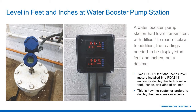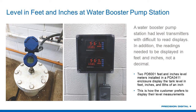The next one we'll talk about is level in feet and inches at a water booster pump station. A lot of times we see customers that want to see readings in feet and inches, and this was the case with this one. We see that this is feet and inches — nine feet, six inches, three-eighths of an inch. We could have provided just a regular ProView meter that would read 9.53 feet, but people doing level a lot of times do like to see the reading in feet and inches.